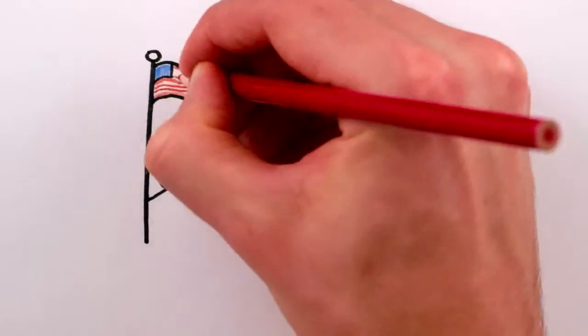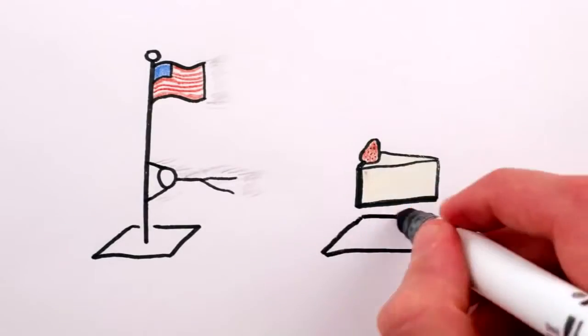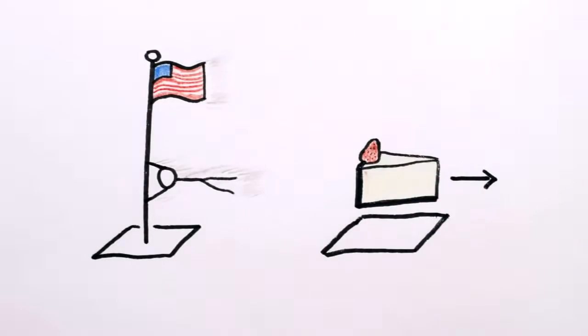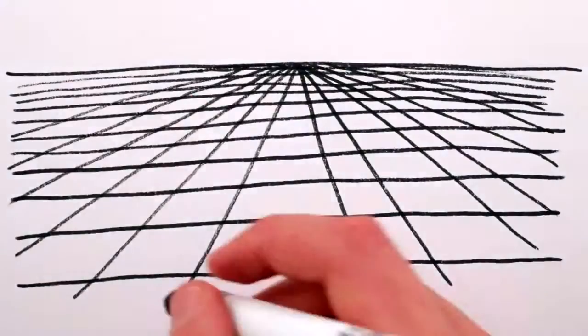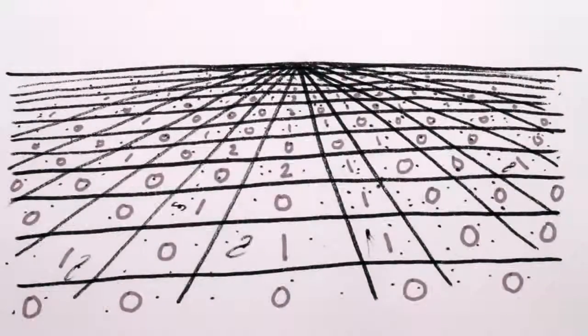Or it might be a complicated number like the direction and speed of the wind, or the number of atoms of strawberry cheesecake that have moved past in the last second. Make a chart of those numbers for every point in the universe, and that's what a field is.